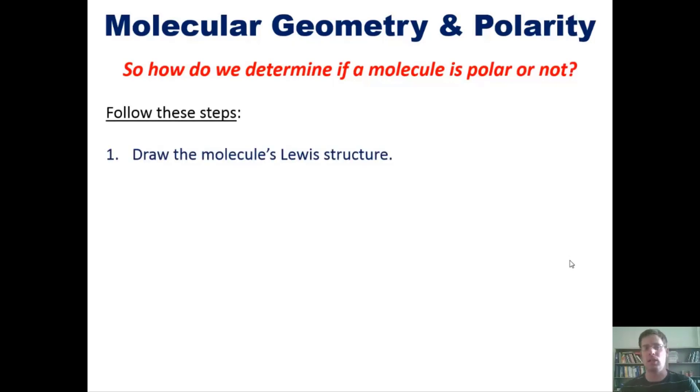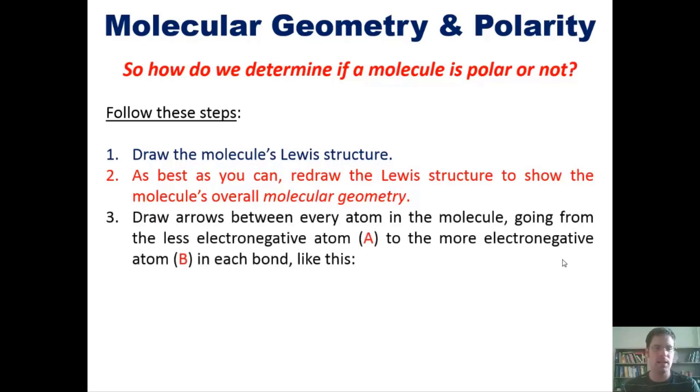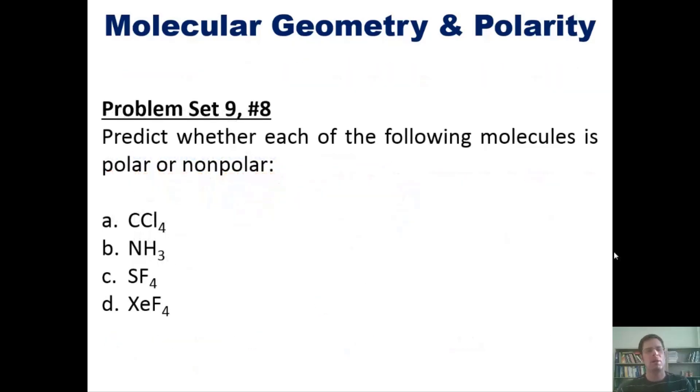So how do we determine if a molecule is polar or not? We follow these steps: 1) draw the molecule's Lewis structure, 2) redraw it to show the overall molecular geometry, 3) draw arrows between every single atom going from the less electronegative atom to the more electronegative atom in each bond, and 4) answer the truck question, which I'll explain using our next example. I'm not going to embed my explanation into this video; instead, I'll link to a separate video. Please make sure to click on this link and watch the explanation.